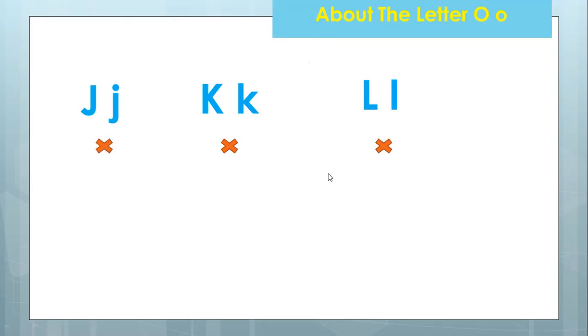How about the next letter? Is this the letter O? No, this is not. This is the letter M. Yeah, you have learned letter M. Is this the letter O? Oh, it's not. This is the letter N. Okay, so you have learned J, K, L, M, N.